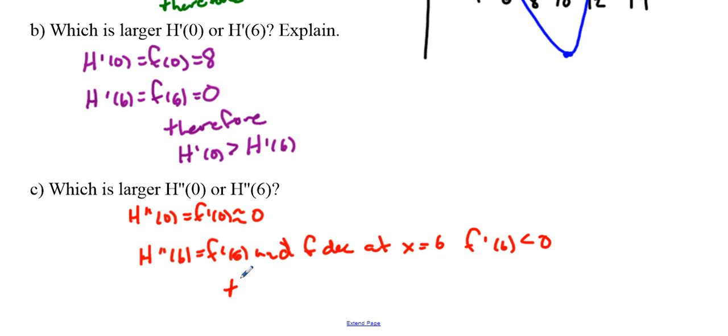Therefore, which one's going to be bigger? h double prime of 0 should be greater than h double prime of 6 because, as we stated before, h double prime of 6 equals f prime of 6, and f decreases at x equaling 6. That means f prime is going to be negative. We are estimating that the derivative at f prime of 0 is the horizontal tangent, equals 0, and makes that curve.